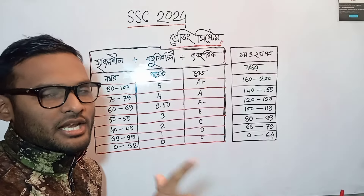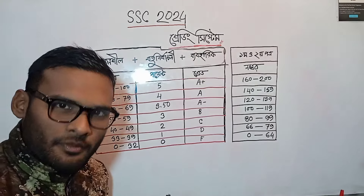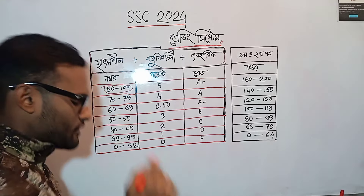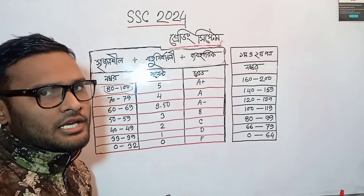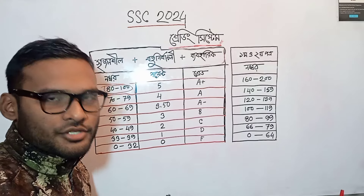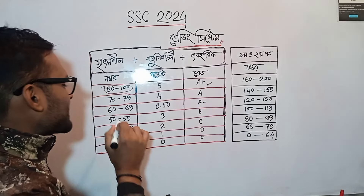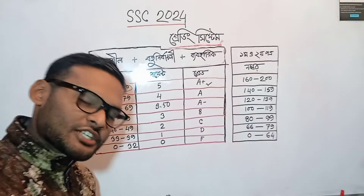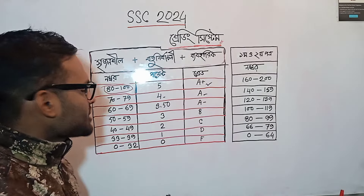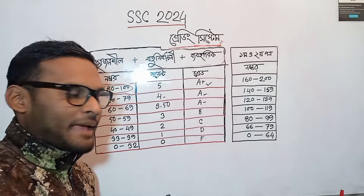So now we can find the subject. The subject is greater than the subject. We can see that our subject will be 150. I will find the subject of every subject. The point is 3.50 and the grade is A-minus.